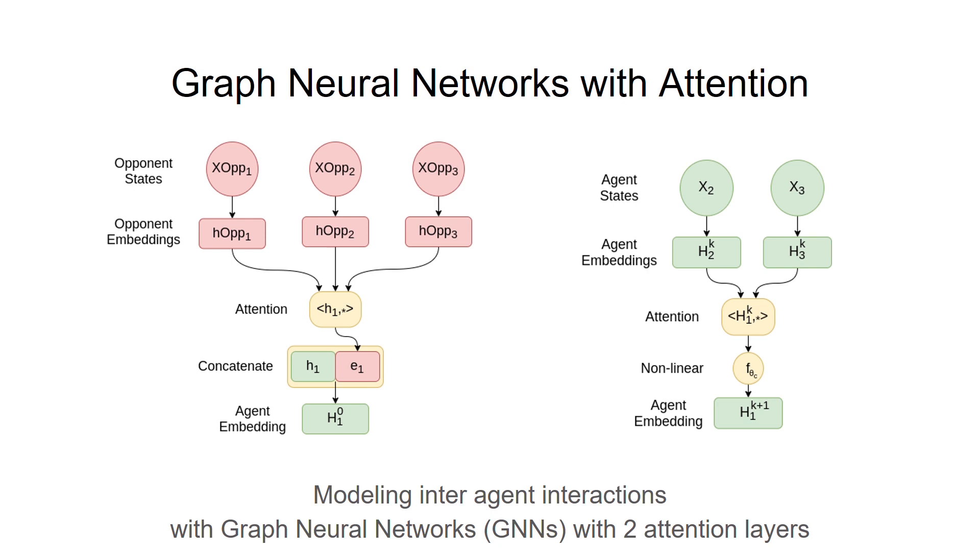To model inter-agent interactions, we propose to use graph neural networks with two layers of attention which allows us to handle a large and variable number of agents. We share parameters across all agents of the same team which allows them to share their experiences but also renders them homogeneous.